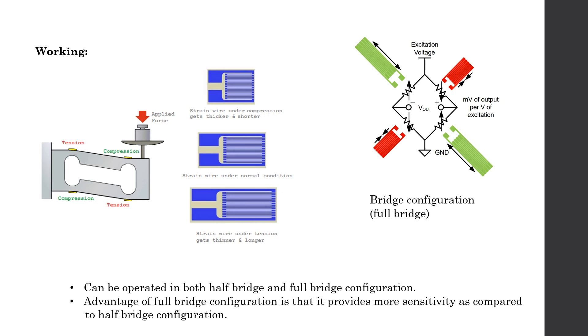If we attach strain gauges at these specific locations and configure them in a Wheatstone bridge circuit, then we can measure the voltage difference across the bridge and this voltage difference will be proportional to the applied load.